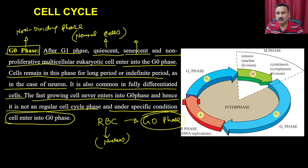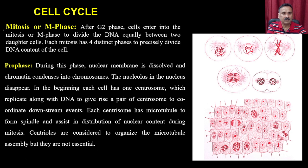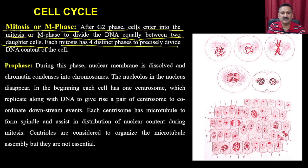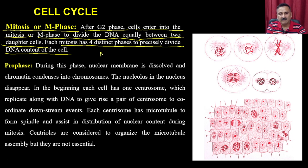After the G2 phase, the cell enters the mitotic phase followed by cytokinesis. The mitotic phase can be divided into mitosis or meiosis. After G2, the cell enters mitosis or the M phase to divide the DNA equally between two daughter cells. Each mitosis has four distinct stages to precisely divide the DNA content.